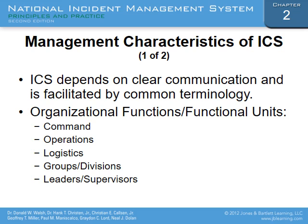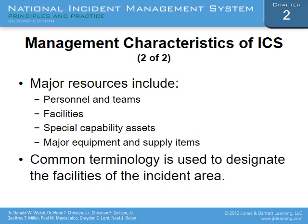NIMS has a resource book listing every piece of equipment and its requirements — for example, a Type 1 bulldozer would have a specific engine capacity and come with two personnel. Organizational functions include Command, Operations, Logistics, Groups, Divisions, Leaders, and Supervisors — going from the top of the org chart down to small groups. Major resources that can be requested include personnel and teams, facilities, special capability assets, and major equipment supply items.